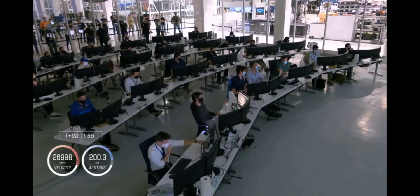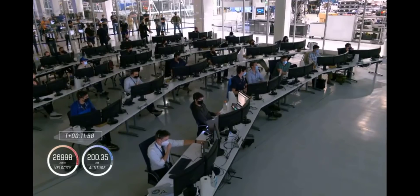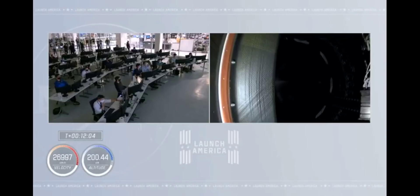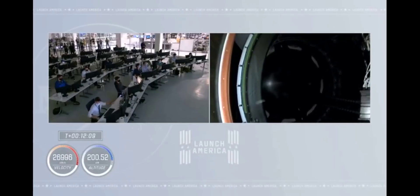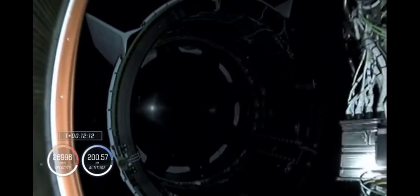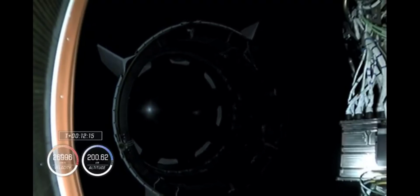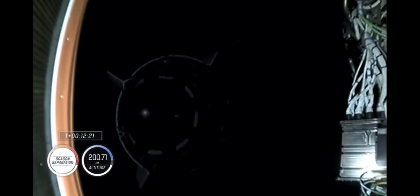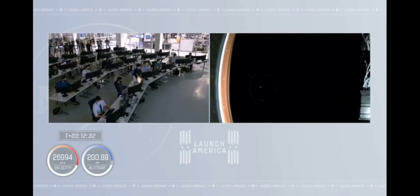Ten seconds to Dragon separation. And separation confirmed. You can see that second stage departing. Crew Dragon leaving it behind. Separation confirmed. Now 12 minutes, 25 seconds into today's flight. Our next thing we'll be looking for is nose cone deploy. Our hooks will start to open on the nose cone and reveal those forward thrusters underneath.